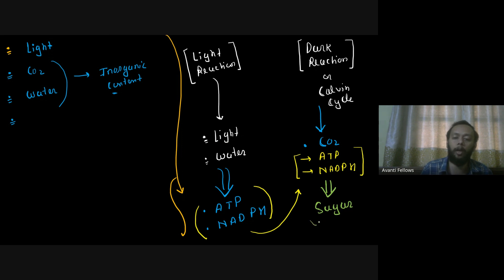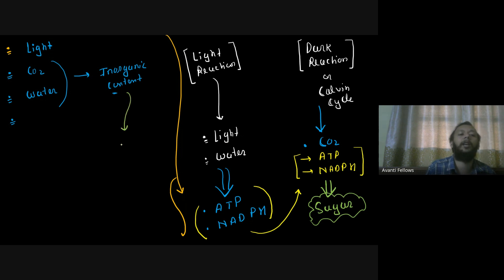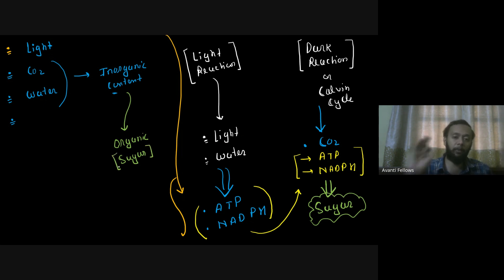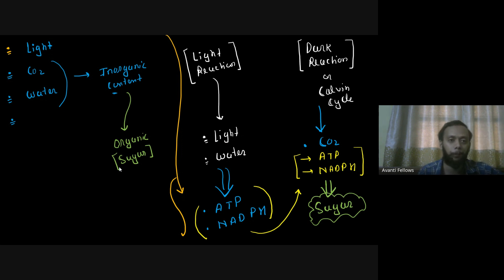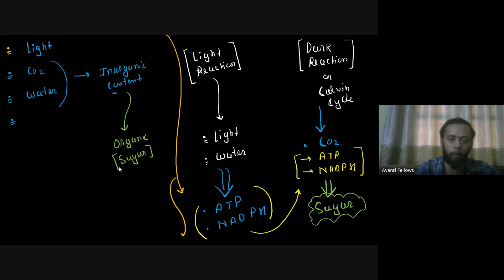In photosynthesis, you use inorganic content — CO2 and water — and out of that you make organic content, which is the sugar molecule. You have to know clearly that photosynthesis has a light reaction and a dark reaction (Calvin cycle). Is this thing clear to all of you?